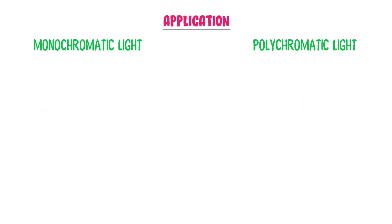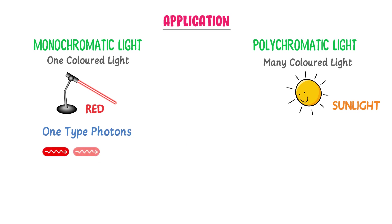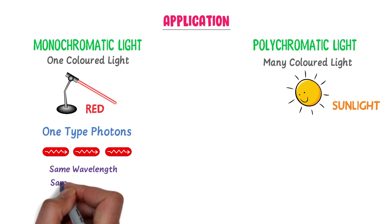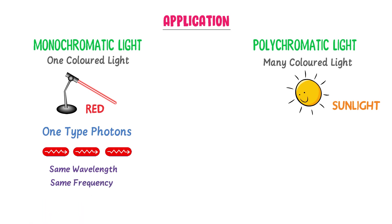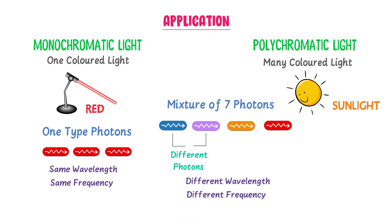Finally, let me teach you the application of Planck's quantum theory. We can easily understand and explain monochromatic light and polychromatic light using this theory. Monochromatic light means light of one color, like red laser light, while polychromatic light means light of many colors, like sunlight. Monochromatic red light is made up of one type of photon — the red photon — where all photons have the same wavelength, frequency, and energy. Sunlight is a mixture of seven colors — violet, indigo, blue, green, yellow, orange, and red — where photons of each color differ in wavelength, frequency, and energy, yet together they make up the white light we see as sunlight.